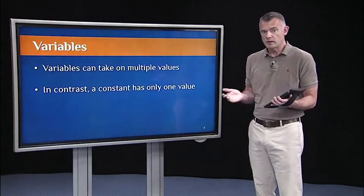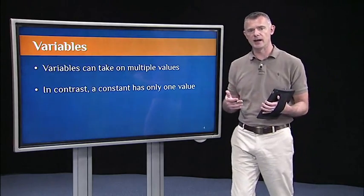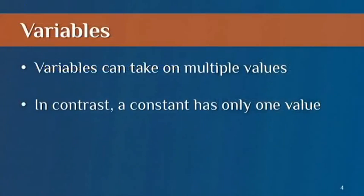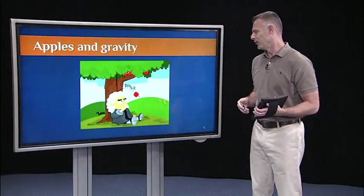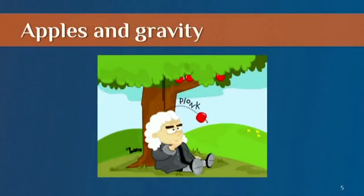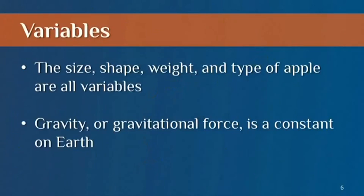So first, what is a variable? Well, a variable is anything that can take on multiple values in contrast to a constant that only takes on one value. So comparing variables and constants, you might say, is like comparing apples and gravity. Apples, the size, the shape, the weight, even the type of apple, those are all variables. There are lots of different types of apples. They take different sizes, different shapes, different weights, and so on. Those are all variable. In contrast, gravity, or gravitational force is a constant on Earth.